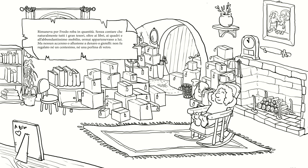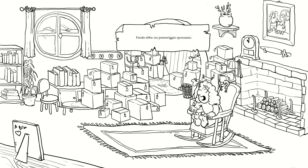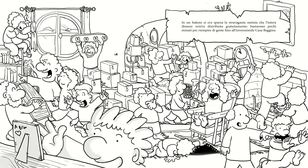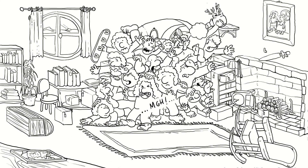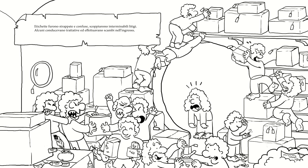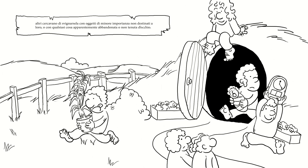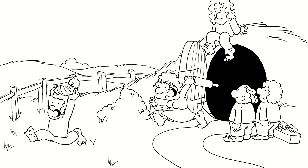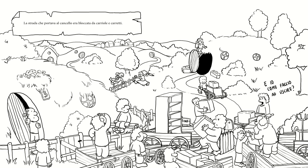Rimaneva per Frodo roba in quantità, senza contare tutti i gran tesori oltre ai libri e ai quadri: l'abbondantissimo mobilio ormai apparteneva a lui, ma nessun accenno allusione a denaro o gioielli, non fu regalato né un centesimo né una perlina di vetro. Frodo ebbe un pomeriggio spossante: in un baleno si era sparsa la stravagante notizia che l'intera dimora veniva distribuita gratuitamente, e bastarono pochi minuti per riempire di gente fino all'inverosimile Casa Baggins. Etichette furono strappate e confuse, scoppiarono interminabili litigi, alcuni conducevano trattative nell'ingresso, altri cercavano di svignarsela con oggetti non destinati a loro. La strada che portava al cancello era bloccata da carriole e carretti.